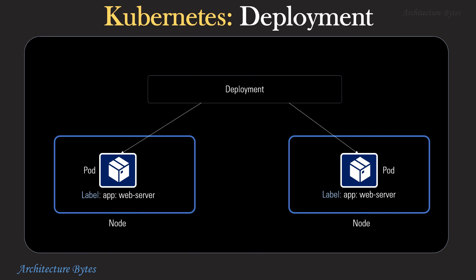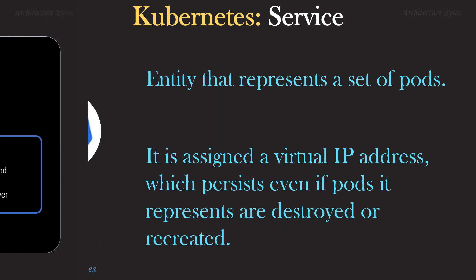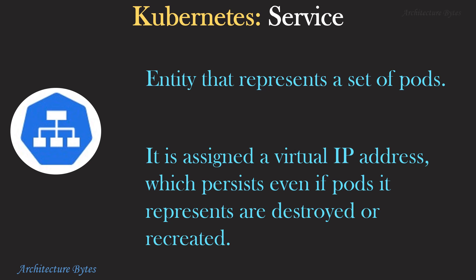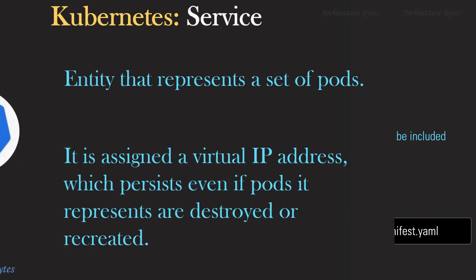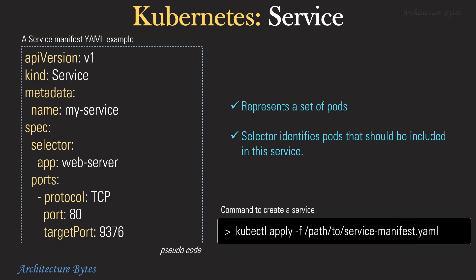Here is a diagrammatic representation of how you can think of a deployment. In Kubernetes, a service is an entity that represents a set of pods. It is assigned a virtual IP address which persists even if the pods it represents are destroyed or recreated. Here is how you would define a service in a YAML file — note the selector part. Any pod in the cluster that has a label app colon web server would become a target for the service.